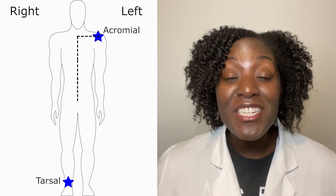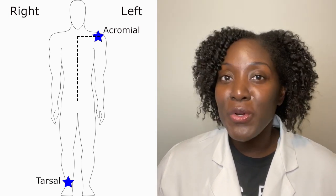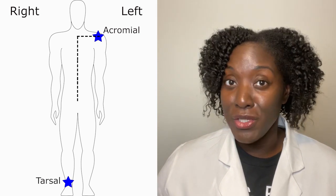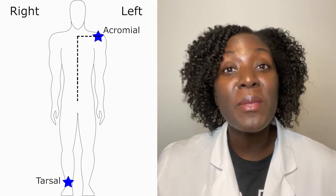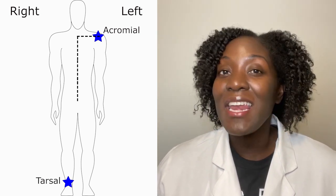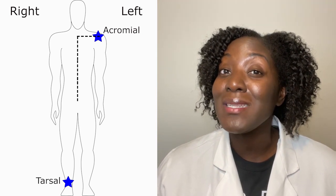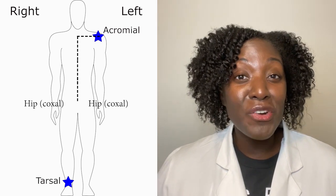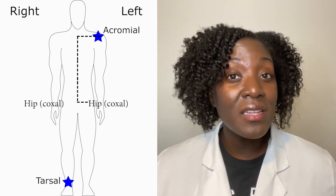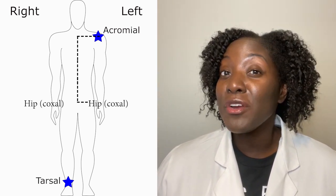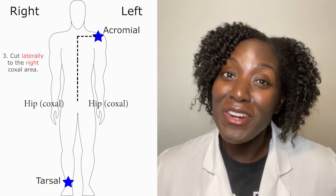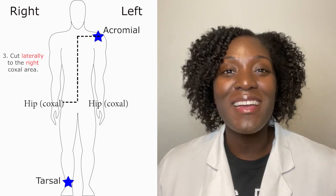We are halfway there. Remember, I started my incision on the left acromial region and I'm ending on the right tarsal. Right now I'm in the middle of the pelvic region and I need to make my incision towards the hip or coxal area. Should I cut laterally to the left coxal area or should I cut laterally to the right coxal area? If you said cut laterally to the right, you are correct.